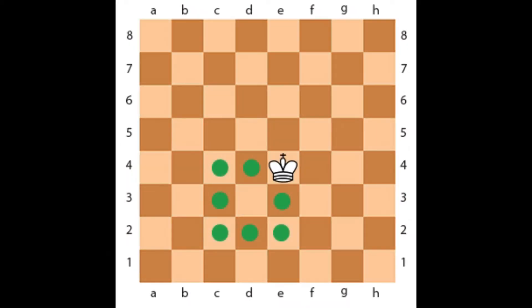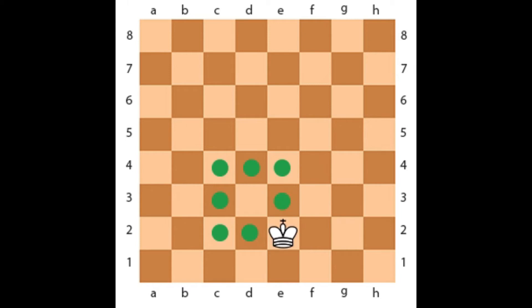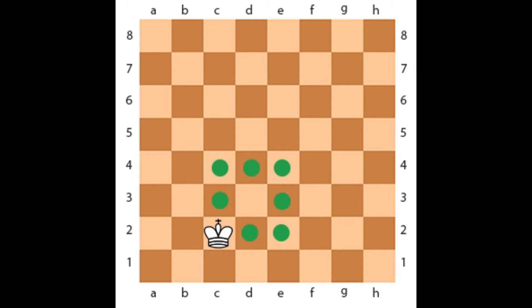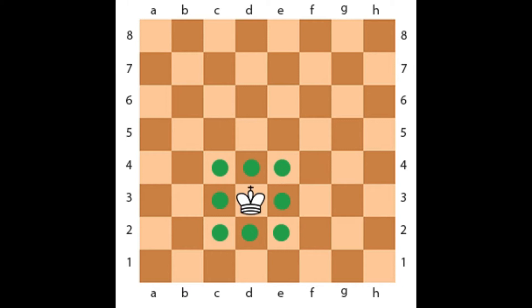The king plays an important role in the chess game. By the rules of chess, his moves are very limited. He can only move one square at a time, but he can move forward, backward, left, right, and diagonally.